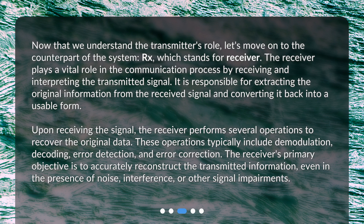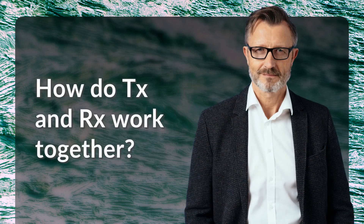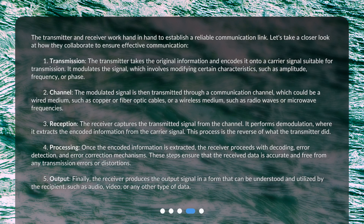The receiver's primary objective is to accurately reconstruct the transmitted information, even in the presence of noise, interference, or other signal impairments. The transmitter and receiver work hand-in-hand to establish a reliable communication link. Let's take a closer look at how they collaborate to ensure effective communication.